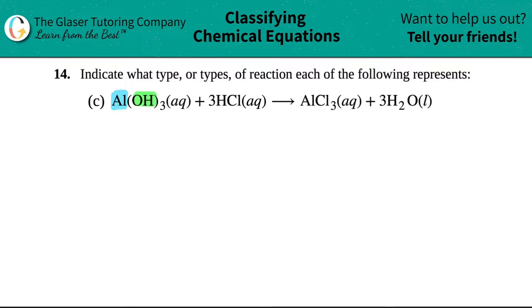So aluminum hooked up with hydroxide, and it's reacting with hydrochloric acid, HCl. Hydrogen, we'll say, is yellow, and then we'll give it a red for the chlorine.